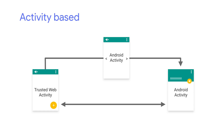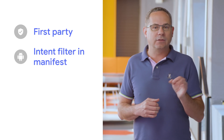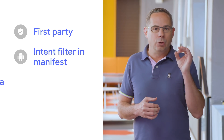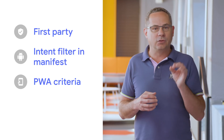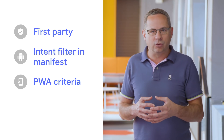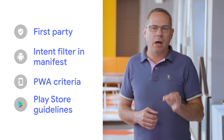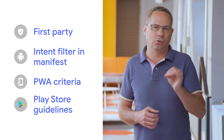Transitions between web and native content are between activities. Trusted web activities do have some constraints. You can't just show any content — it must be yours, and you must be able to prove that it's yours by adding a set of digital asset links. You must include an intent filter for the opened URL in your Android manifest. Your app must pass the Chrome PWA installability checks, which includes being served over HTTPS, registering a service worker, and including a manifest. And, very important, your app must still meet all of the normal Play Store guidelines.